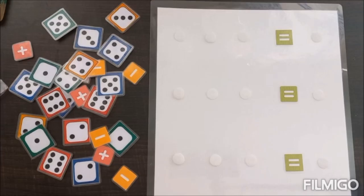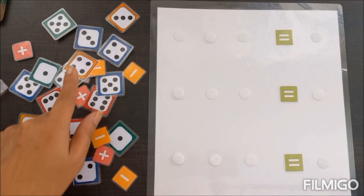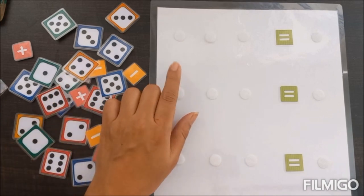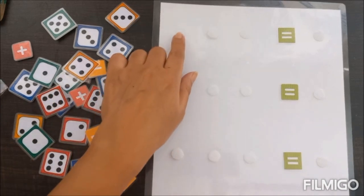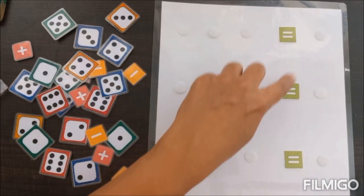Hello everyone, welcome back to the channel. Today's TLM is about basic arithmetic—addition or subtraction through dominoes. This is a basic white laminated sheet with velcro on it, and this is the equal